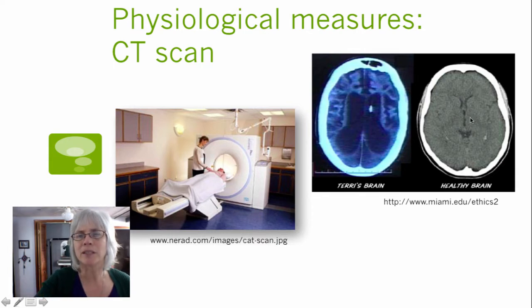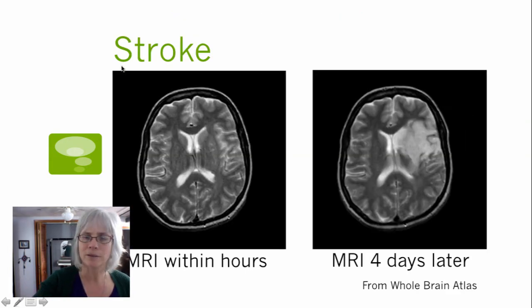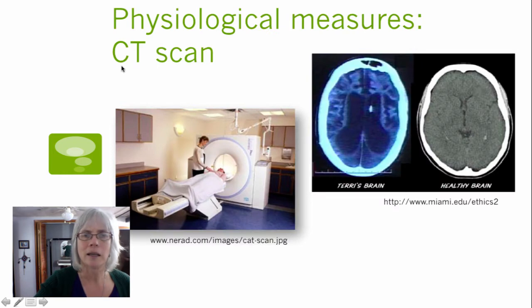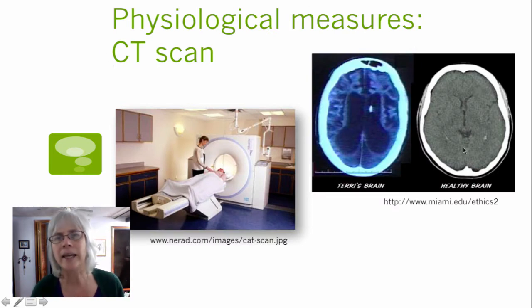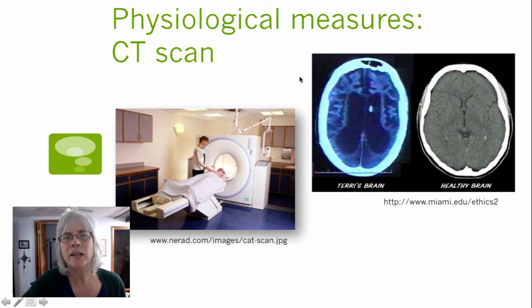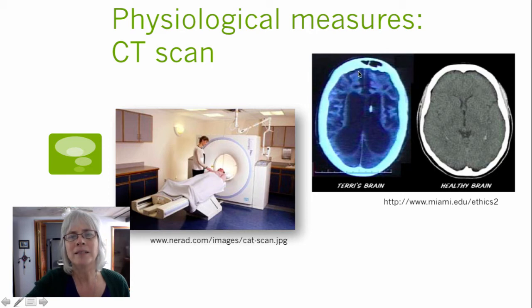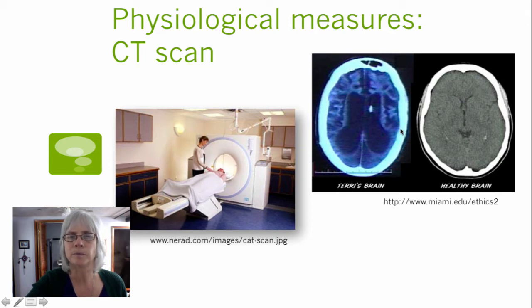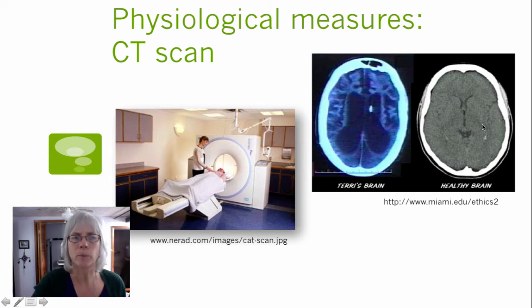Those very large ventricles, relative to those seen in this brain, indicate a loss of brain tissue. You can also see that loss of brain tissue by seeing some of the hills and valleys — the gyri and sulci in this brain — that you can't see in this much more packed brain.